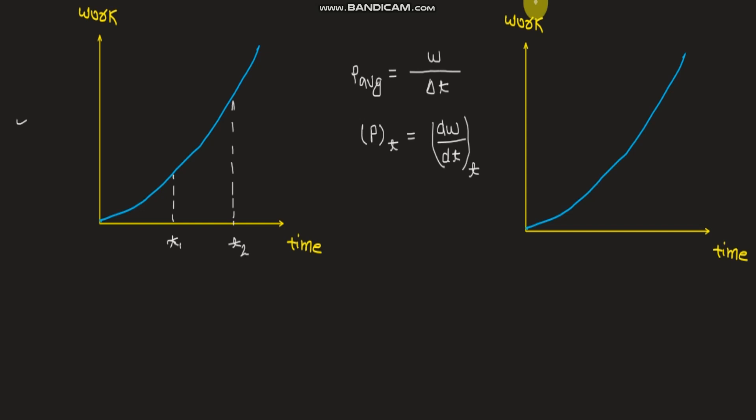Welcome back. In this section we will dig a bit deeper into the meaning of average power and instantaneous power. For that, we have shown a graph between work and time. The meaning of average power is the amount of work done in a particular time interval, and that time interval should be macroscopic in nature — meaning it should be a considerable amount, like five minutes, two minutes, three minutes. Accordingly, we have shown two times, t1 and t2, in the graph.